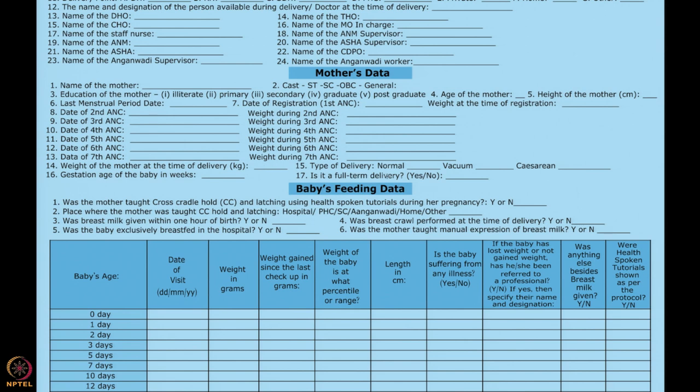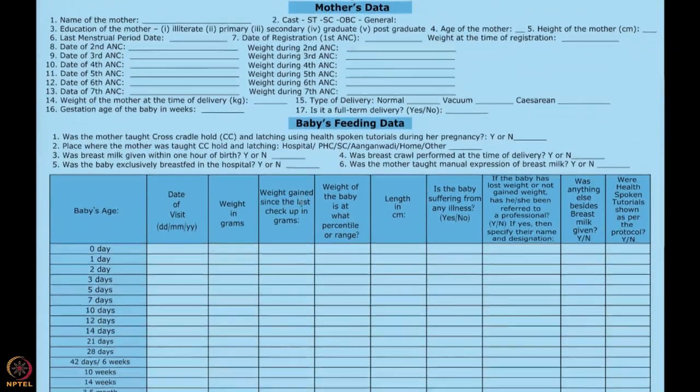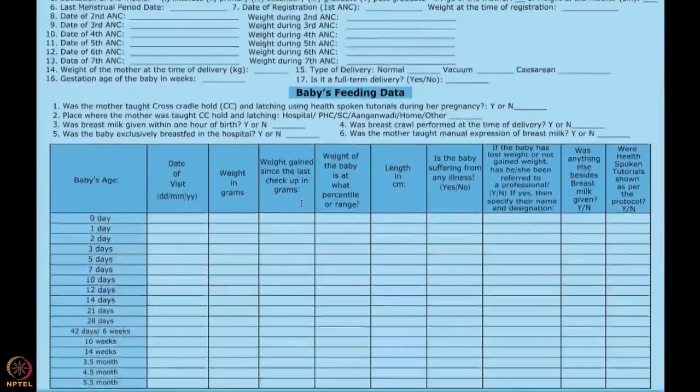Type of delivery — it could be normal, vacuum, or cesarean section. Gestational age of the baby in weeks, and is it a full-term delivery, yes or no.